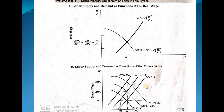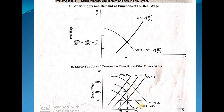Now let's suppose that prices in the economy have gone up from P1 to P2. When prices go up, we know that marginal revenue product of labor is going to go up — it's going to shift rightwards or upwards. So we shift this curve towards the right or upward side and we get the new curve MPN multiplied by 2P1.